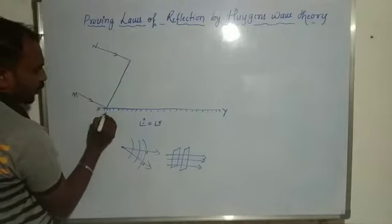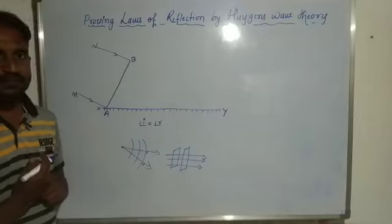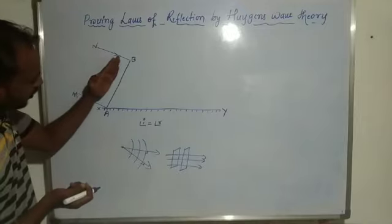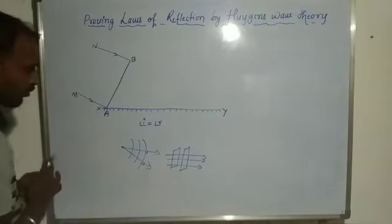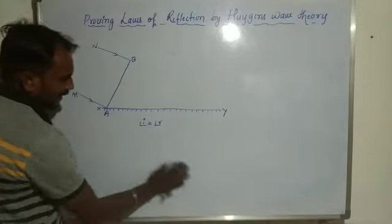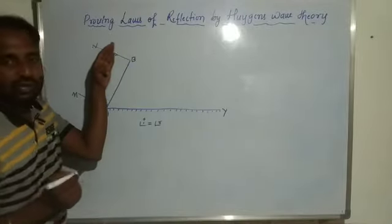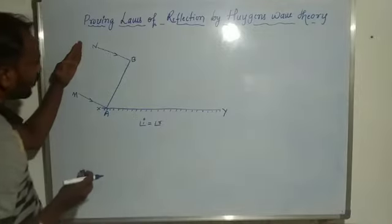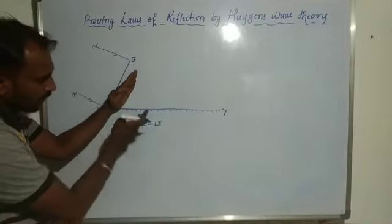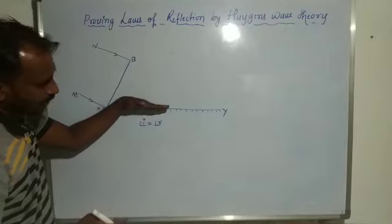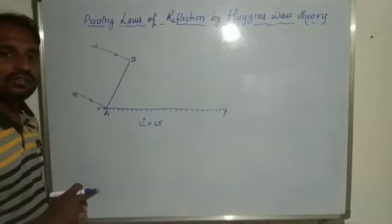This point is A and this point we consider B. AB is a plane wavefront. First, one edge of this wavefront is incident on the reflecting surface — edge A is incident on the reflecting surface first, and afterwards edge B of the wavefront is incident on this reflecting surface and strikes it.